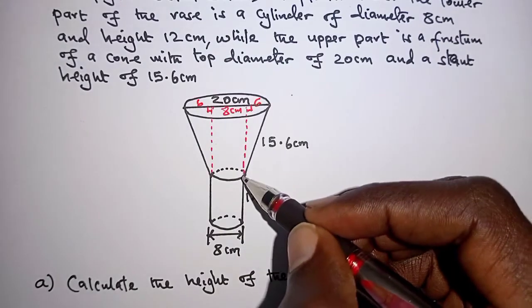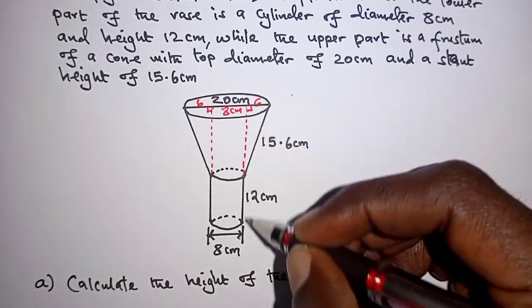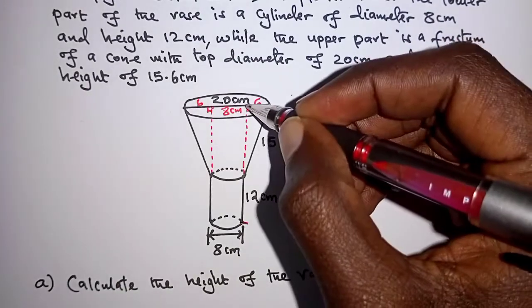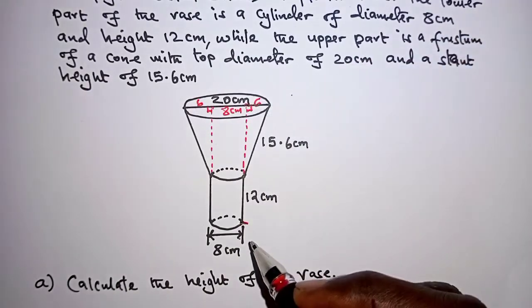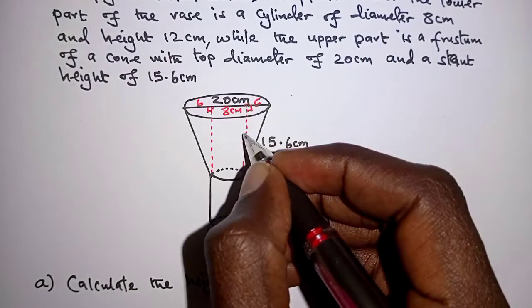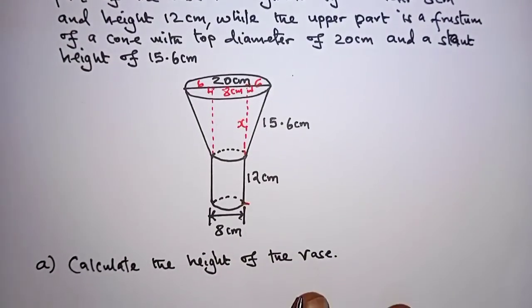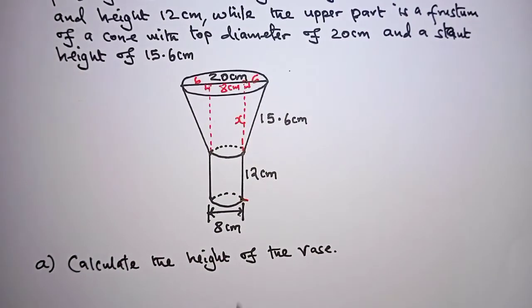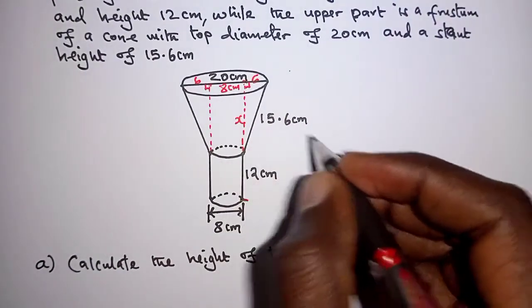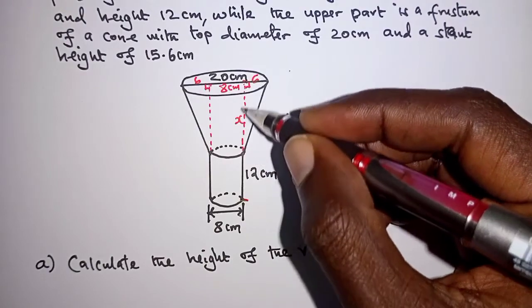Remember, we are interested in getting the height of the vase, that is from this end to the top. Now, the first thing we can let this height here be x. So if that height is x, then getting x,